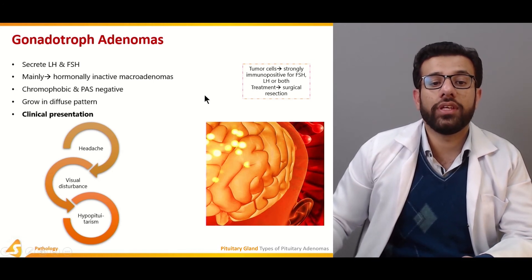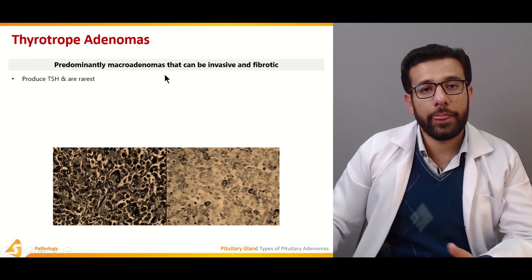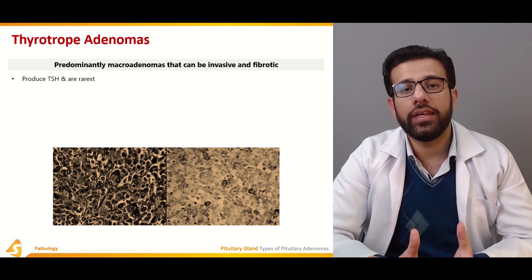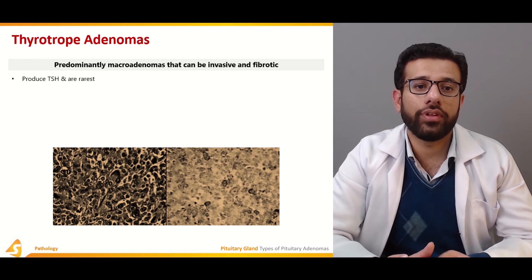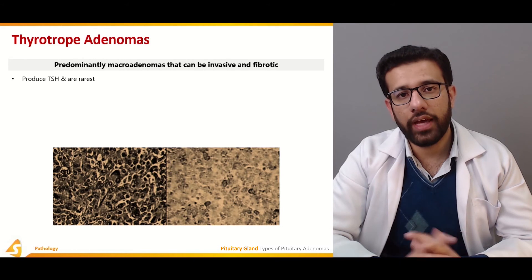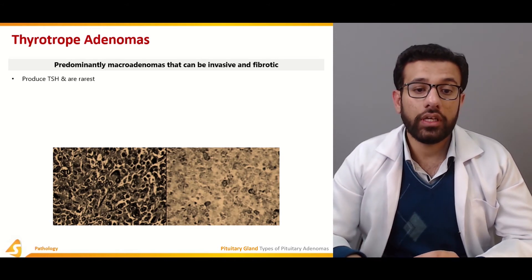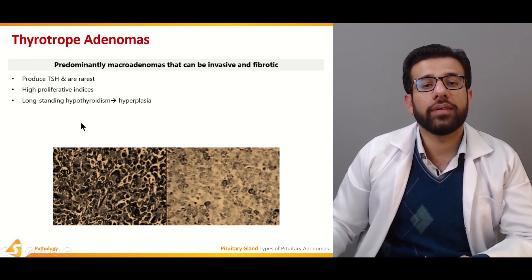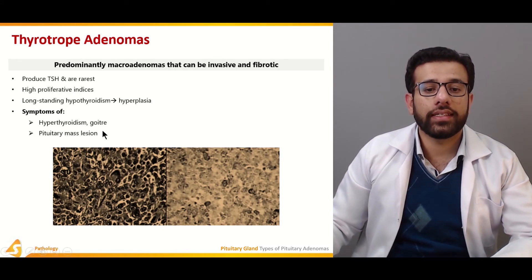The thyrotroph adenomas involve thyrotroph cells related to TSH secretion. Increased TSH causes symptoms of hypothyroidism. Laboratory findings show elevated TSH with suppressed T3 and T4. Clinical features include weight gain, soft voice, and cold intolerance. These adenomas have high proliferative indices, and long-standing hypothyroidism can lead to glandular hyperplasia.